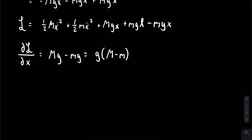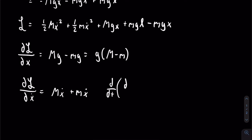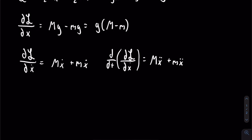Next, we take the partial of the Lagrangian with respect to x-dot. Using the power rule, we know that this is going to be equal to capital M x-dot plus lowercase m x-dot. Then we take the time derivative of this and get that it is equal to capital M x-double-dot plus lowercase m x-double-dot. After factoring out x-double-dot, we get that this is equal to the quantity capital M plus lowercase m times x-double-dot.